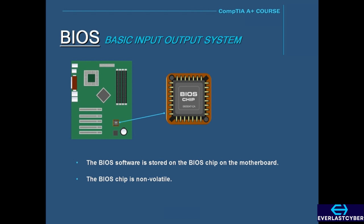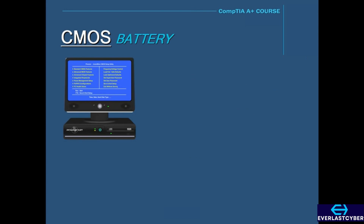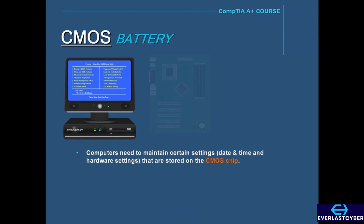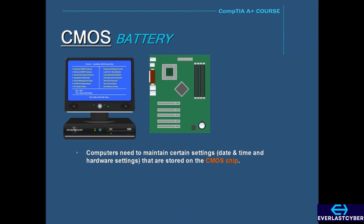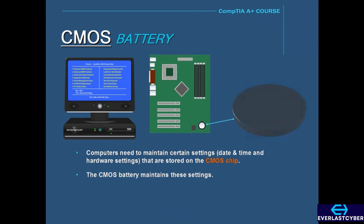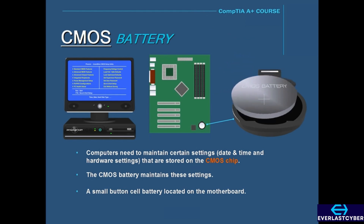Some popular vendors of BIOS software are American Megatrends and Phoenix Technologies. After a computer is turned off and the power cable is unplugged, the computer needs to maintain certain settings, such as the date and time and hardware settings. These settings are stored on the motherboard in a special chip called a CMOS chip, which stands for Complementary Metal Oxide Semiconductor. For the CMOS chip to maintain these settings, it needs a battery called the CMOS battery — a small button cell battery usually located on the bottom right-hand corner of the motherboard.